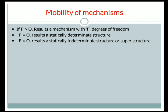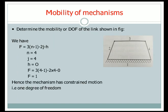Now we shall find degrees of freedom for some simple numerical examples. First, determine the mobility or degrees of freedom of the link shown in the figure. In this mechanism, there are four links numbered one, two, three, and four. We will use Grubbler's criteria since this is a planar mechanism: f = 3(n-1) - 2j - h. Here n equals four.